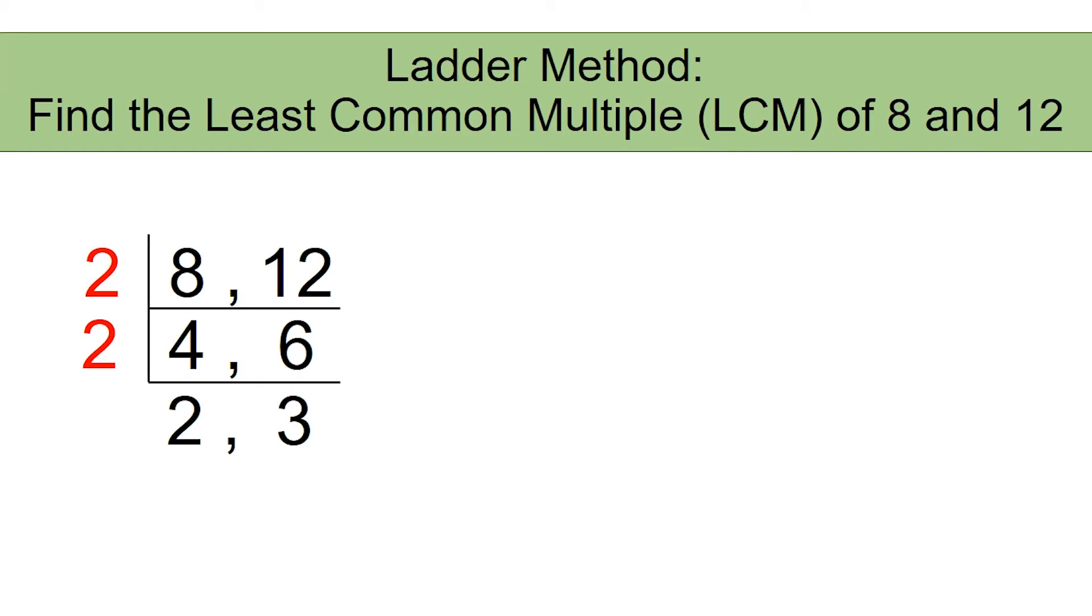Now you can see there are no numbers that can divide 2 and 3 other than 1. Since we have reached the point of the prime numbers, let's stop.